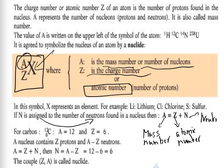Here we have an example about carbon which has a mass number A equal to 12 and Z equal to 6. A nucleus contains Z protons and A minus Z neutrons. So N equals A minus Z — that's 12 minus 6, which equals 6.